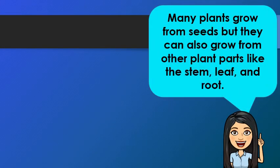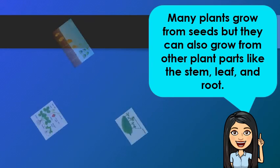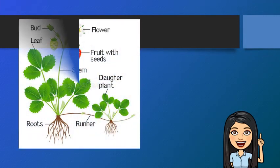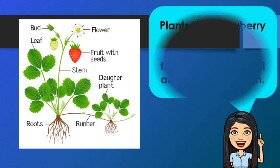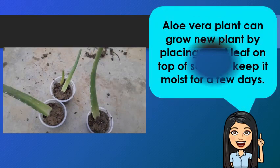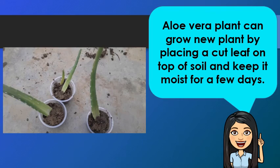How about plants? Many plants grow from seed, but they can also grow from other plant parts like the stem, leaf, and root. For example, plants like strawberry and spider plant produce new plants through their horizontal above-ground stem. Aloe vera plant can grow a new plant by placing a cut leaf on top of the soil and keeping it moist for a few days.